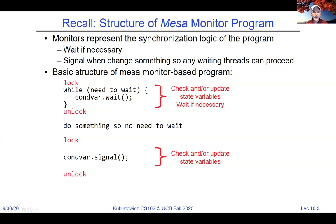The key idea is that you're always within the critical section — you grab the lock and release it at defined points. All code between lock and unlock is executed with locks held. When you go to sleep, the lock is released under the covers and reacquired before you start up again. We spent time using this pattern to solve the reader-writer problem.